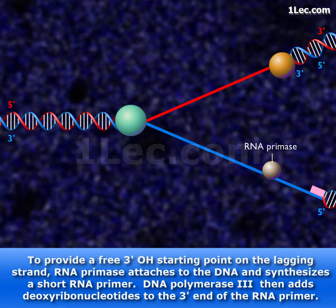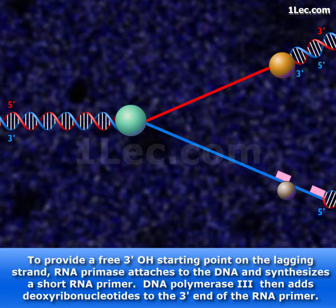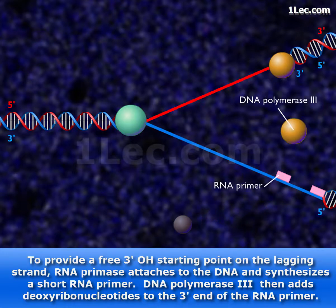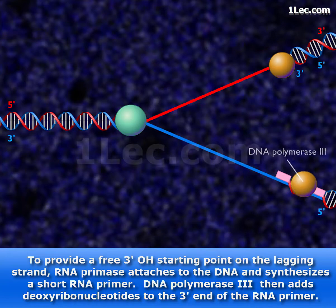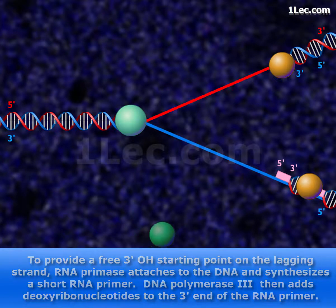RNA primase attaches to the DNA and synthesizes a short RNA primer. DNA polymerase III then adds deoxyribonucleotides to the 3' end of the RNA primer.